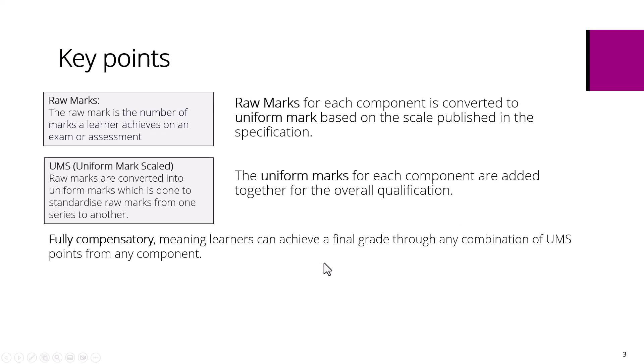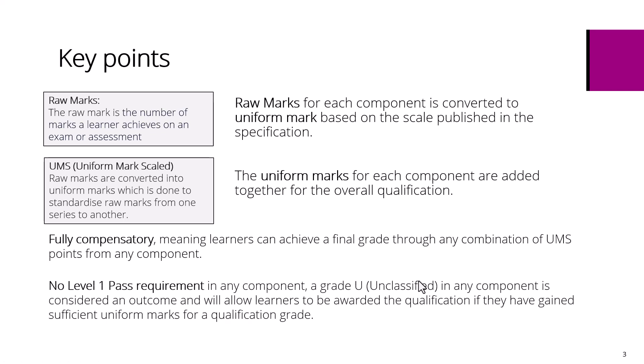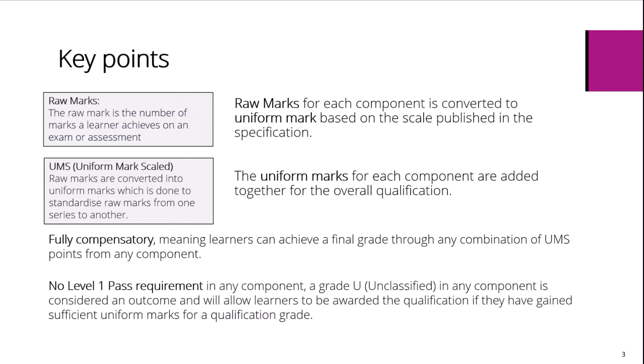These qualifications are fully compensatory, meaning learners can achieve a final grade through any combination of uniform marks from any component. There is no Level 1 pass requirement in any component. A grade U, unclassified, in any component is considered an outcome and will allow learners to be awarded the qualification if they have gained sufficient uniform marks for a qualification grade.